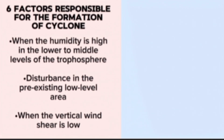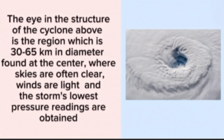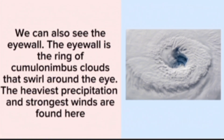And the last factor is when the vertical wind shear is low. The eye in the structure of the cyclone is the region which is 30 to 65 kilometers in diameter, found at the center, where skies are often clear, winds are light, and the storm's lowest pressure readings are obtained. We can also see the eyewall. The eyewall is the ring of cumulonimbus clouds that swirl around the eye. The heaviest precipitation and strongest winds are found here.